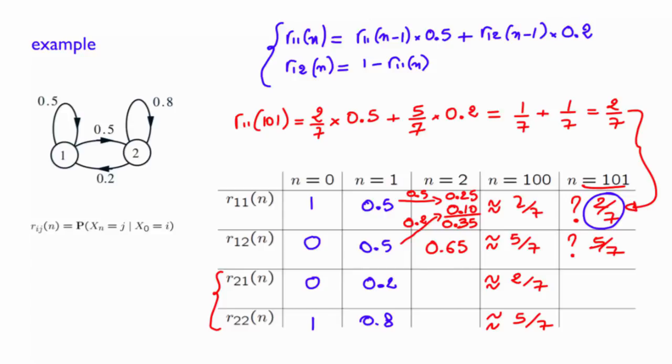This is a second interesting fact. Irrespective of where we started, either from state 1 or from state 2, the probability of being in state 1 after a long period of time seems to converge to the same constant 2 over 7. So in some sense, for that particular example, the importance of the initial state vanishes as time goes by and does not influence long-term probabilities of being in any of the two states.